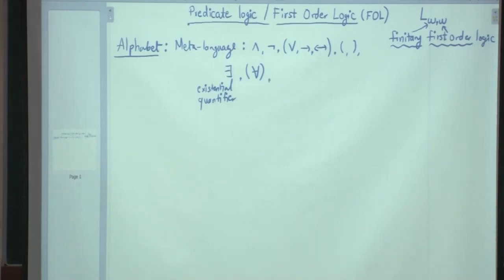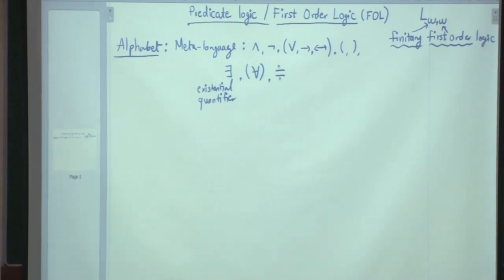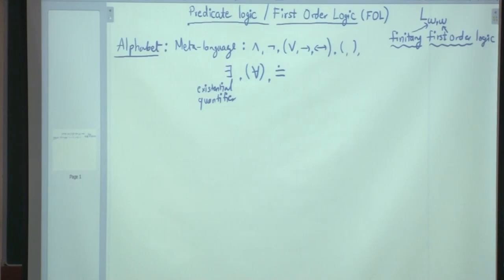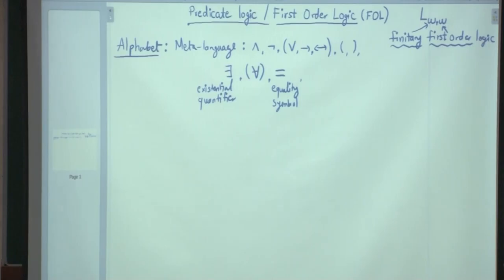We will also use the equality symbol. To be pedantic, one might write it distinctly to separate it from ordinary equality — it is just a symbol and doesn't mean anything yet. Conjunction doesn't mean 'and' either — that happens when we study semantics. Right now, it's just a symbol.